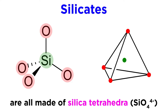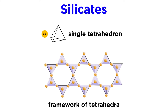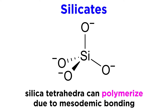Silicate minerals are divided into subclasses based on their arrangement and linkage of silica tetrahedra, which can range from a single isolated tetrahedron bonded to a metal, to a complex three-dimensional framework of silica tetrahedra. The ability of silica tetrahedra to link together, or polymerize, to form a diverse array of intricate structures stems from its unique mesodemic bonding, where each of the oxygen anions has one of its two valence charges satisfied by bonding with its tetrahedron's central silicon atom, thus leaving a remaining charge of -1 at each corner of the tetrahedron that is available for bonding.